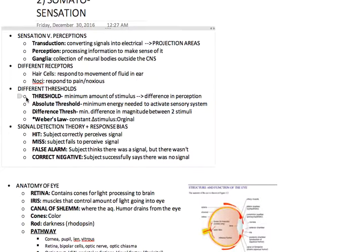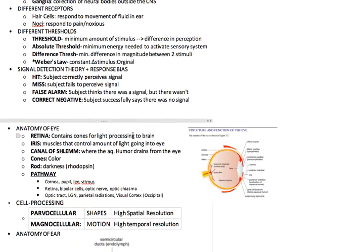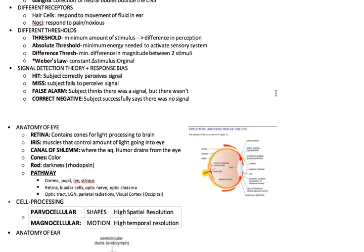There's different thresholds as well. The threshold is the minimum amount of stimulus that is used to have a difference in perception. Absolute threshold is the minimum energy needed to activate sensory systems, so for an action potential to fire off. Difference threshold is the minimum difference in magnitude between two stimuli to tell if there's a difference. Weber's Law usually has a constant, which is a change in stimulus to the original.